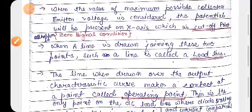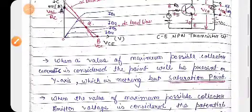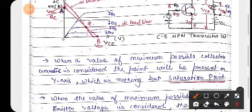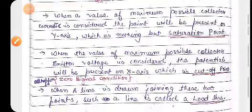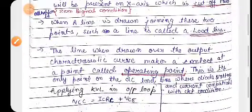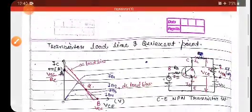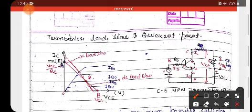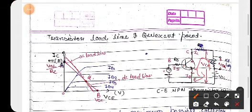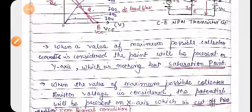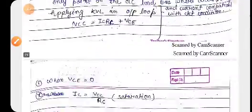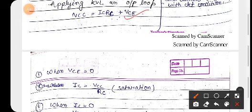Now we have to find maximum IC and VCE. So here we apply KVL. Applying KVL gives us the equation: VCC = IC × RC + VCE. This is my KVL equation. We will use this equation further.